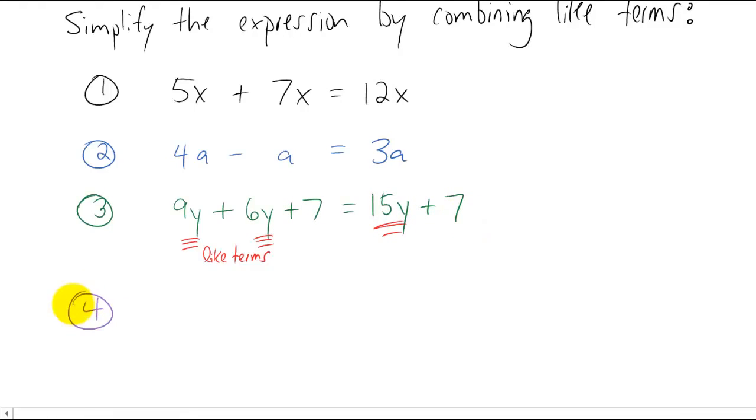One more example. This problem is a bit more complicated because the first thing you have to do is realize that five x and negative three x are like terms. But you'll also realize that positive three and positive one are like terms.